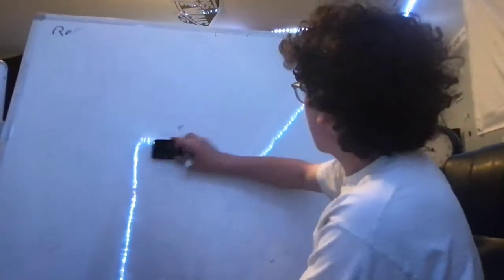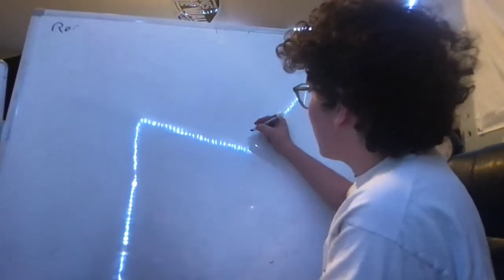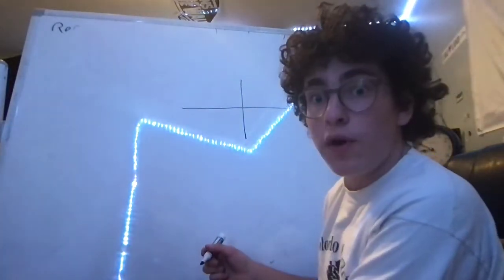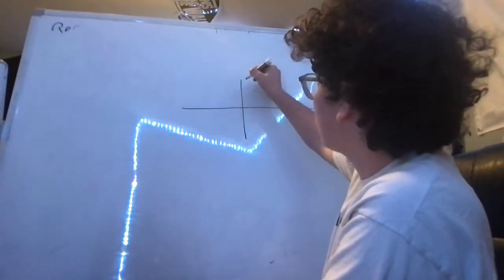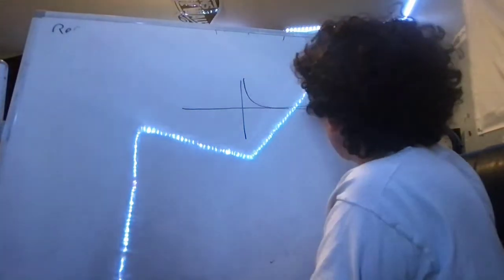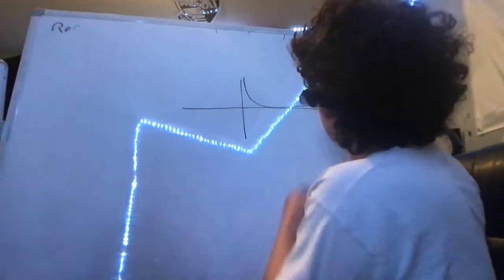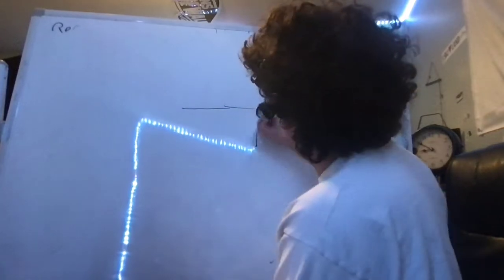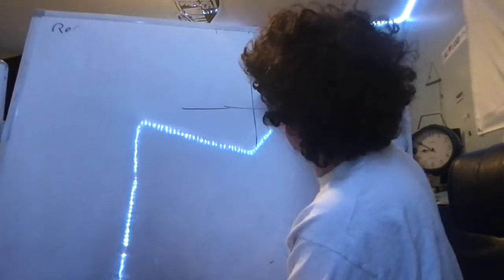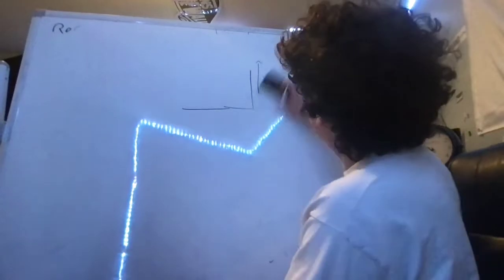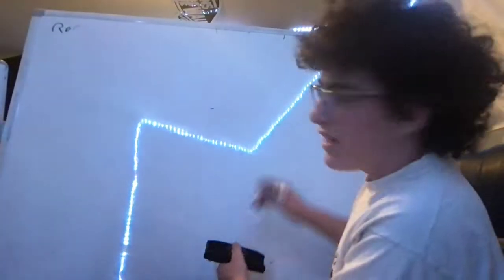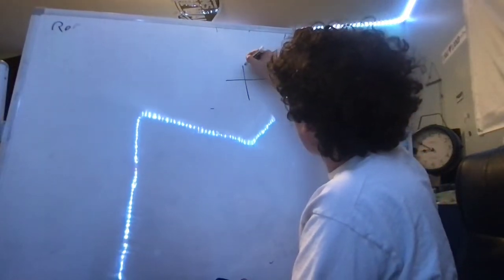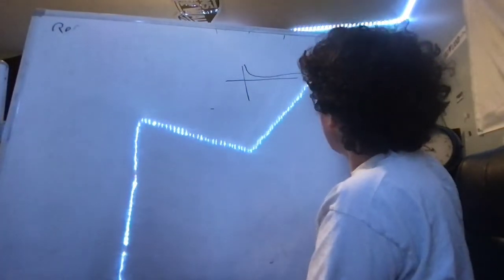In the same way, we can rotate really any function around the x-axis. So if we rotate the function 1 over x around the x-axis, which is a function that kind of looks like this. It's called the reciprocal.